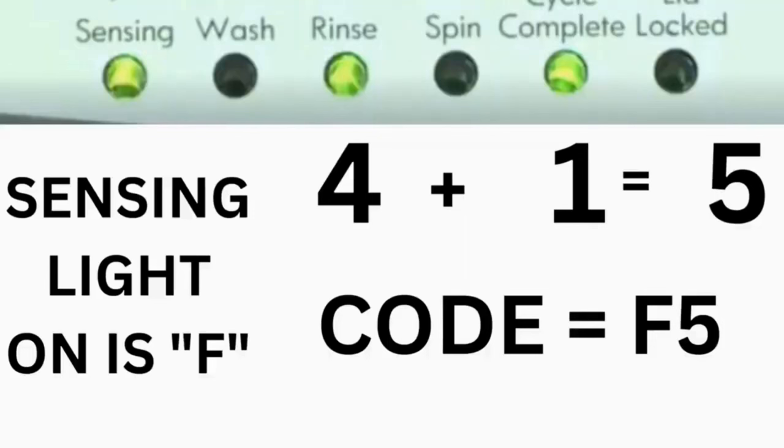For example, for error code F5E3, when the sensing light is on, the rinse and the cycle complete lights are on. Adding all 3 together equals 5. This means the first part of the code is F5.